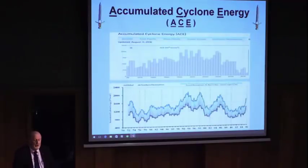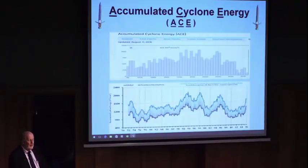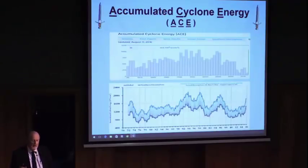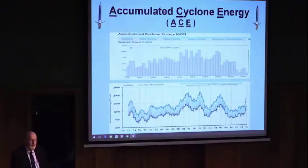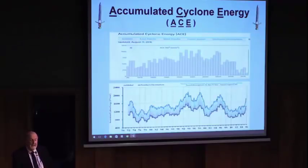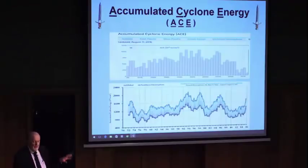Here we have a concept called accumulated cyclonic energy. It takes wind speed and atmospheric pressure, measured every six hours. From 1970 on, we don't really have any discernible trend. And by the way, over the last 15 years, as CO2 is still increasing, accumulated cyclonic energy is decreasing. Again, another inverse correlation, but it's not necessarily causation.